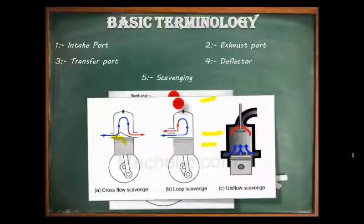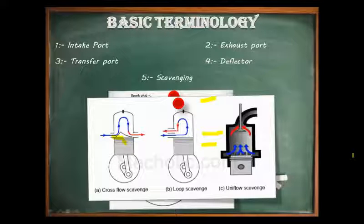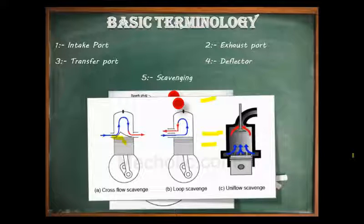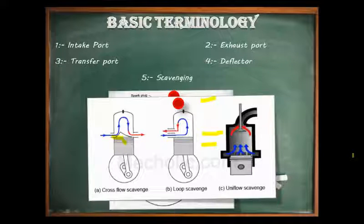Loop scavenging uses carefully shaped and positioned transfer ports to direct the flow of fresh mixture towards the combustion chamber as it enters the cylinder. The fuel-air mixture strikes the cylinder head, then follows the curvature of the combustion chamber and is deflected downward. This not only prevents the fuel-air mixture from travelling directly out the exhaust port but also creates a swirling turbulence which improves combustion efficiency, power, and economy. Usually a piston deflector is not required, giving this approach a distinct advantage over the cross-flow scheme.